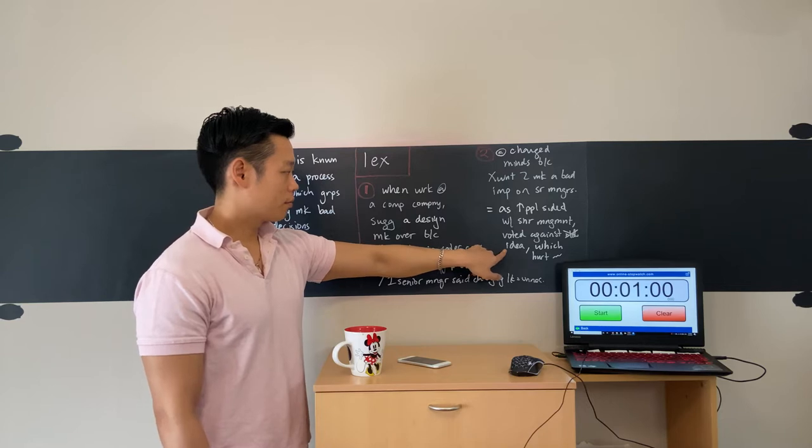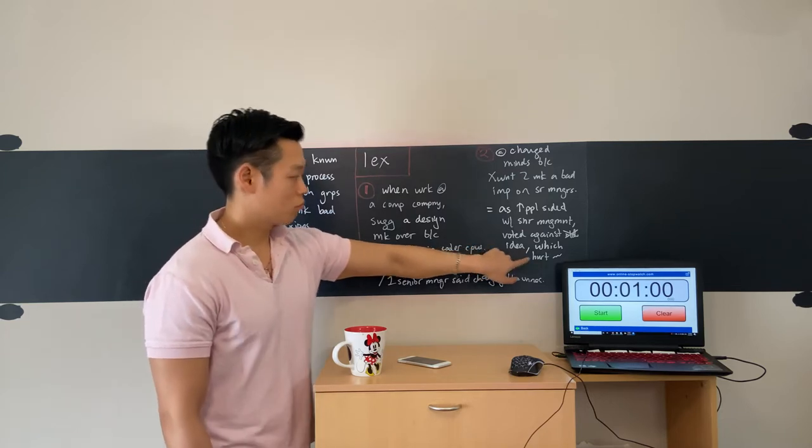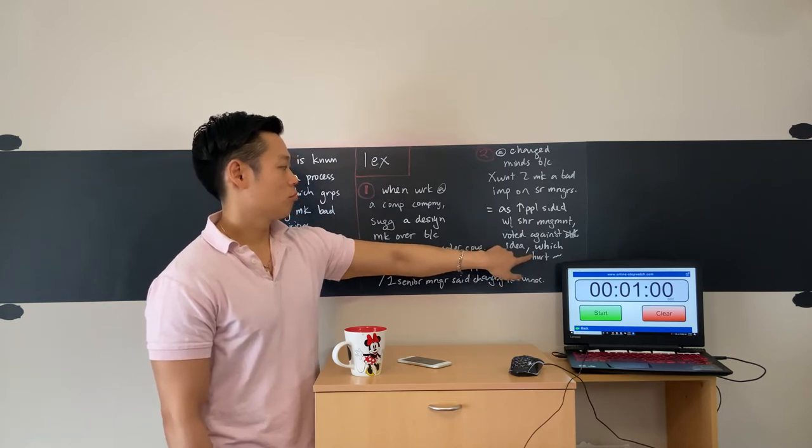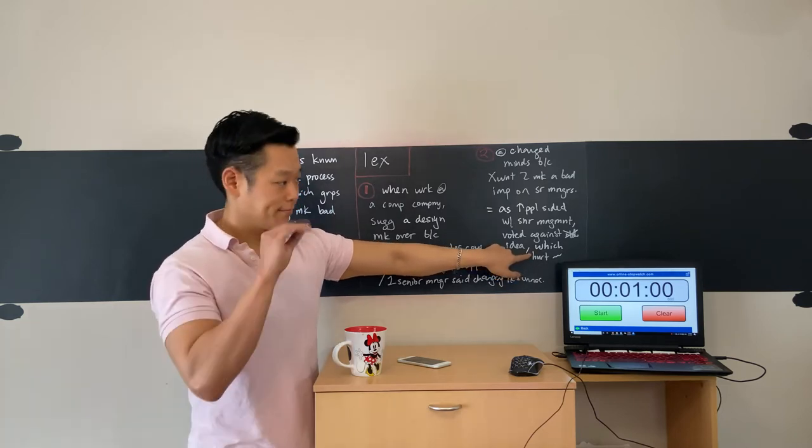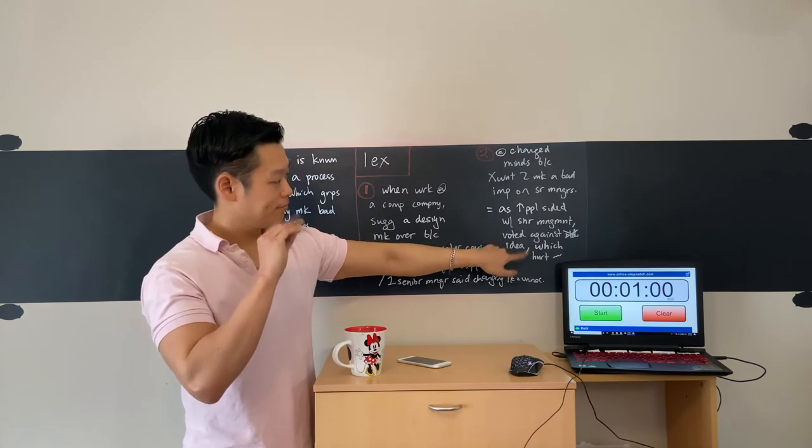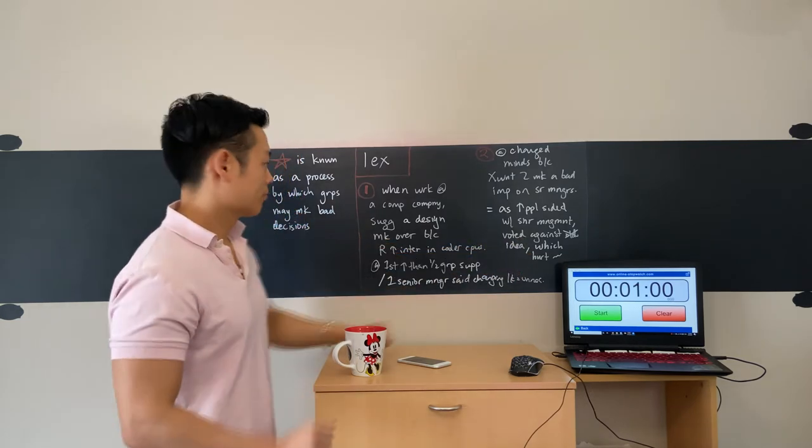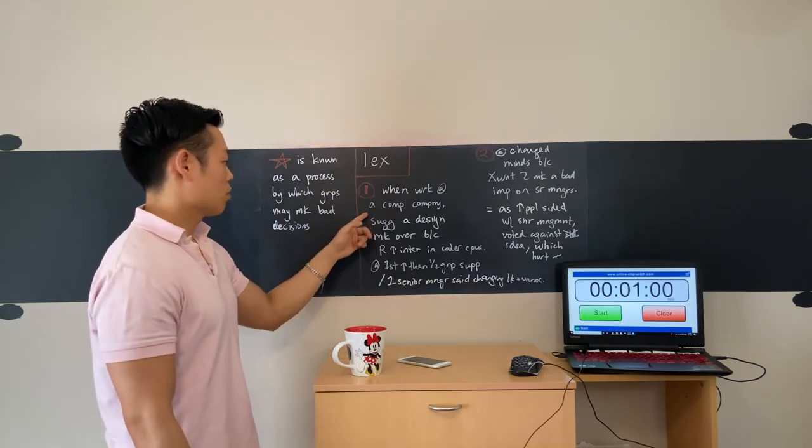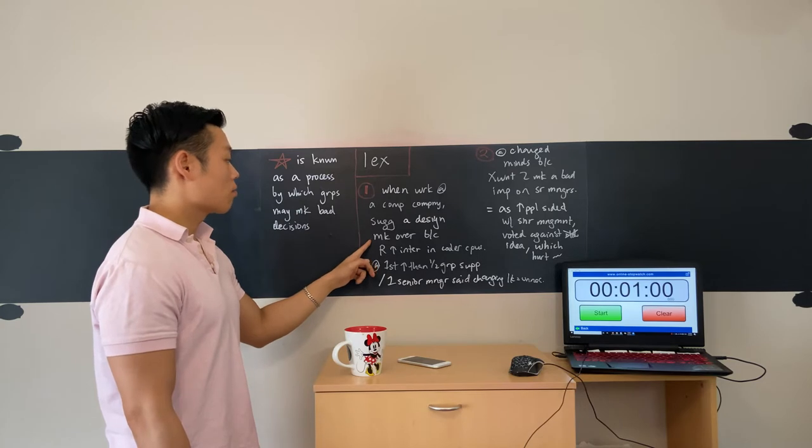So we unanimously decided to stay with the current old-looking design, but this decision ended up costing us a lot of money. That same year our competitor came out with a new design that attracted some of our customers and prevented us from profiting on potential new customers. Explain groupthink and its effects using the example of the computer company.